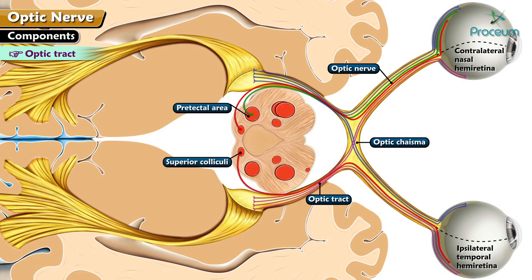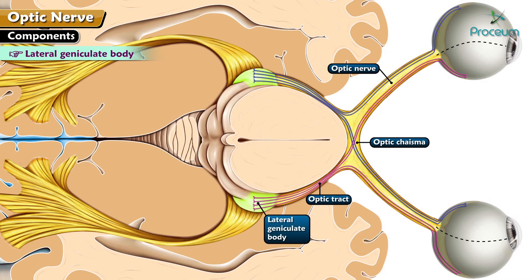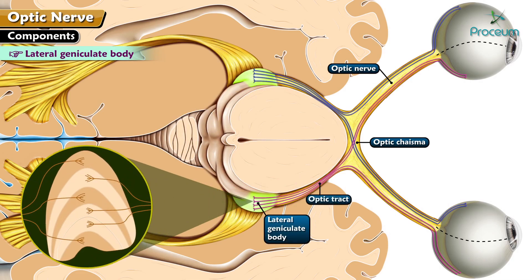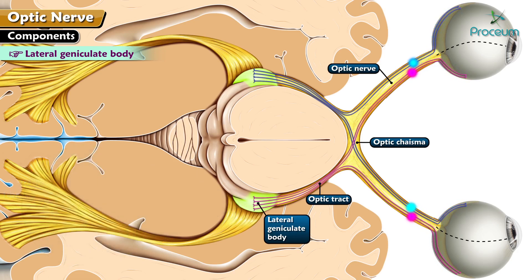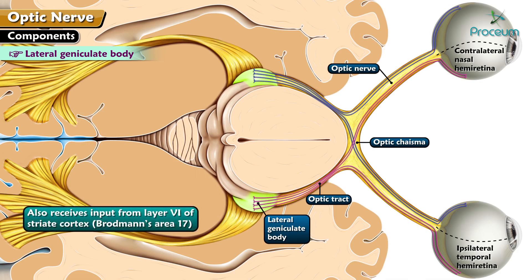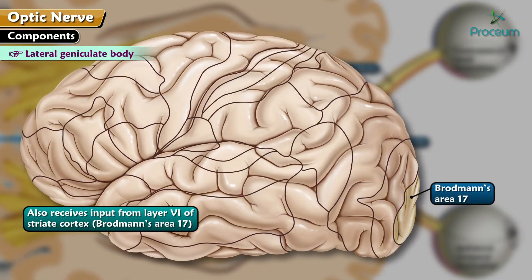The lateral geniculate body is a relay station of the optic tract and is structurally made of a six-layered nucleus. Layers one, four, and six receive crossed fibers, while layers two, three, and five receive uncrossed fibers. It receives fibers from the ipsilateral temporal hemiretina and the contralateral nasal hemiretina. It also receives input from layer six of the striate cortex, which corresponds to Brodmann's area 17.